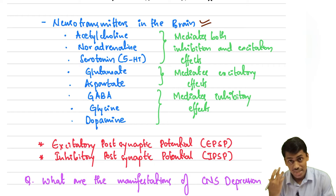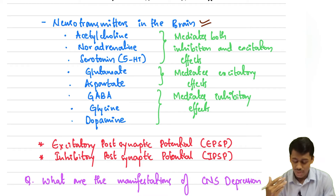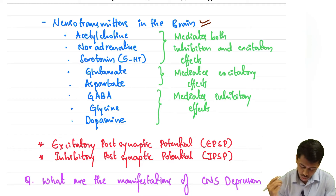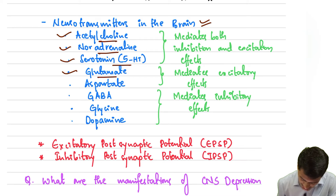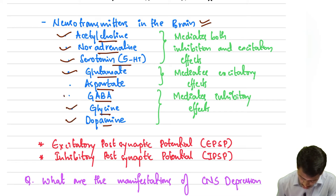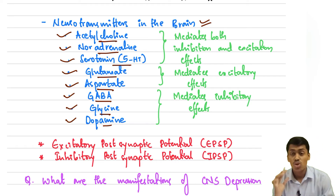What are the neurotransmitters that are present in the brain? Any drug you give affects these neurotransmitters, which results in whatever effects we want to achieve. The neurotransmitters we have are: acetylcholine, noradrenaline, serotonin, glutamate, aspartate, GABA, glycine, and dopamine. These are all the neurotransmitters found in the brain.